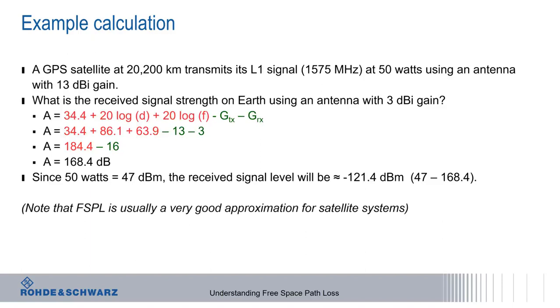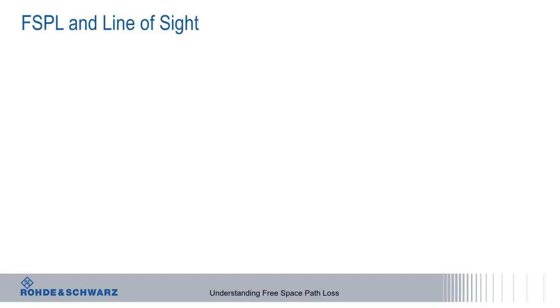Remember that free space path loss is usually a very good approximation for satellite systems, especially when atmospheric attenuation is negligible. One of the main reasons why free space path loss works well for satellite systems is that these systems are essentially line of sight.